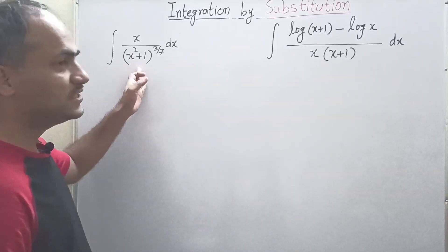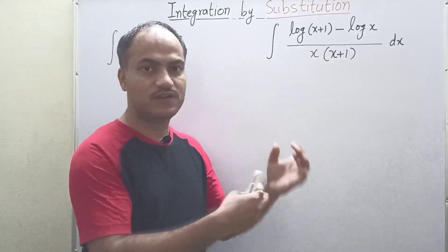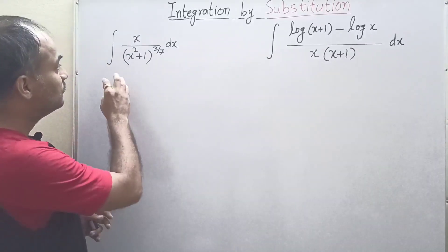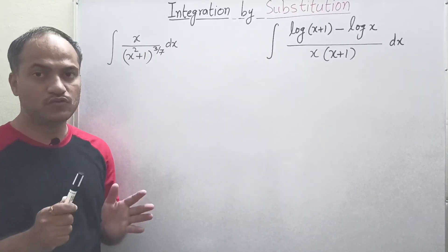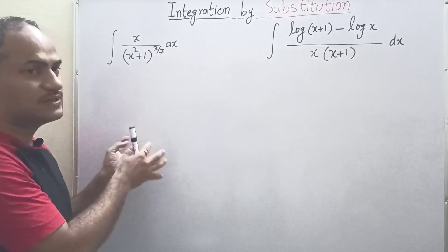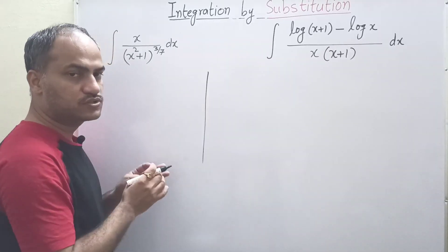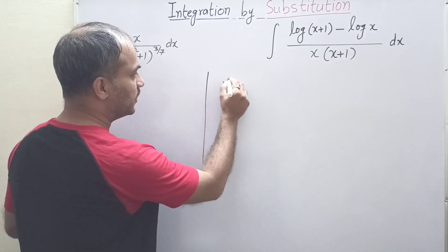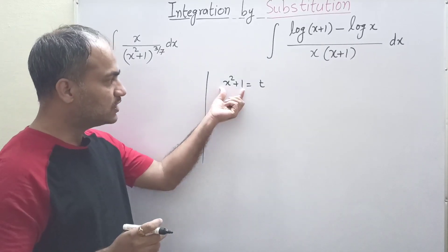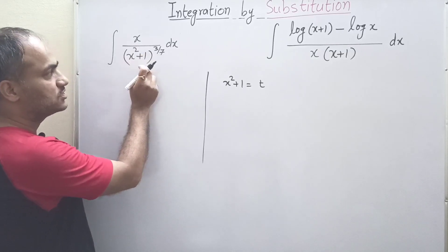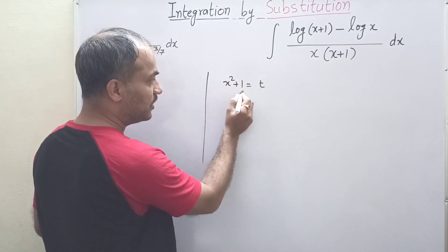Let us start with a basic question to see how substitution works and what the procedure is. At first glance we do not find any formula that can be directly applied here, so what we try to do is substitute something to make the question easier. Suppose we substitute x squared plus 1 equal to t. Our purpose is to simplify this expression and the whole integration.